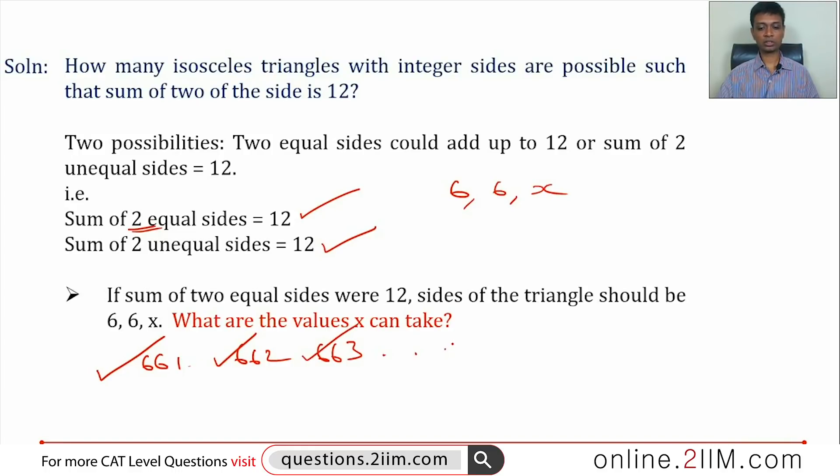6, 6, 6 will obviously work. 6, 6, 7 will work, 6, 6, 8 will work. Till what value? 6, 6, 100 is not possible. 6, 6, 12 will not be a triangle. So till 6, 6, 11 we will have a triangle.